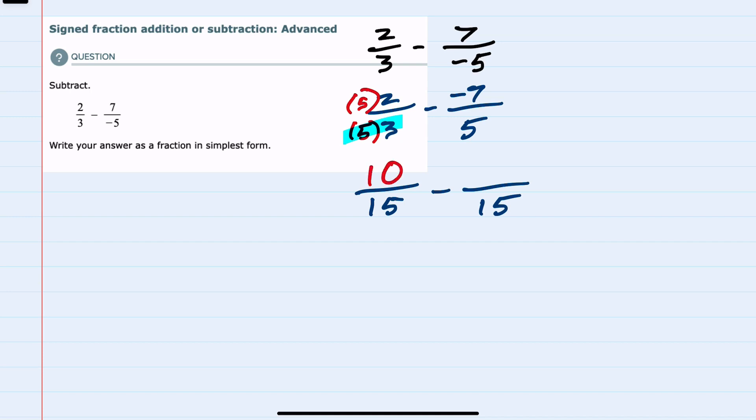On the right-hand side, I would need to multiply that 5 by 3, so I would need to do so in the numerator as well. 5 times 3 is the 15 common denominator, and in the numerator, the negative 7 times 3 is a negative 21.